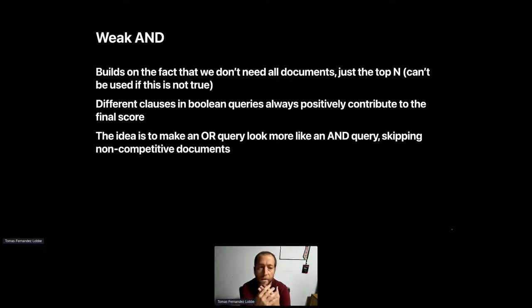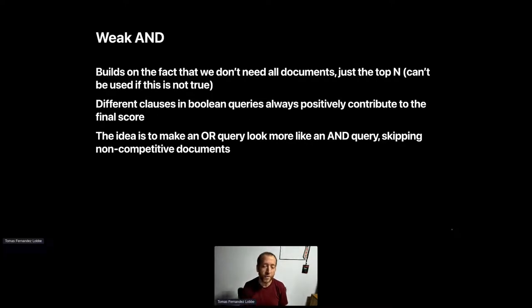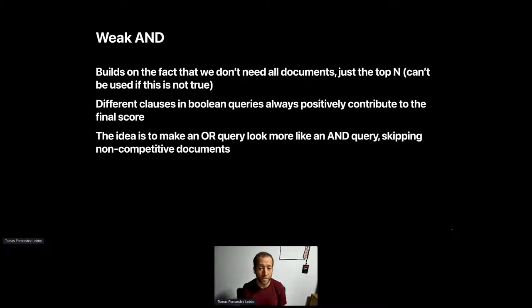That's what WAND tries to address. WAND builds on the idea that we don't need to score every document — we just need the top N. It will attempt to terminate early and skip over non-competitive documents, while still being correct, meaning the actual top-N documents returned are the same as if you ran the regular exhaustive search. It also builds on the idea that different Boolean clauses cannot contribute negatively to a document's score. The idea is to make the OR query look more like an AND — that's where the name comes from.